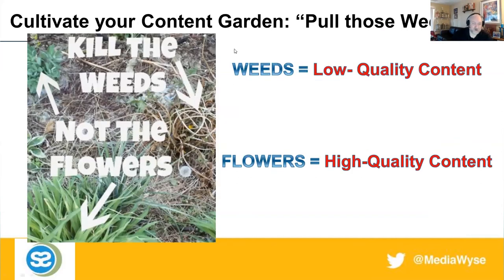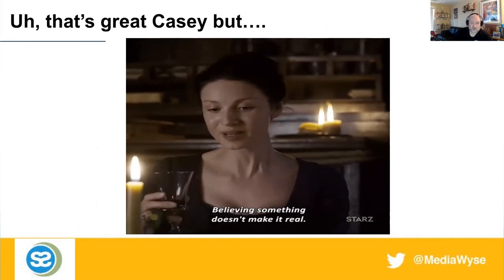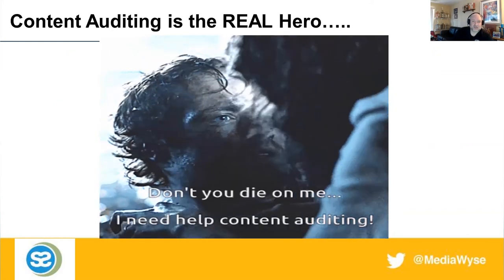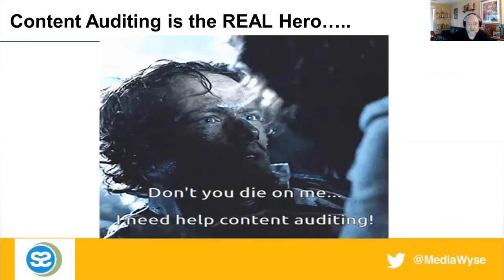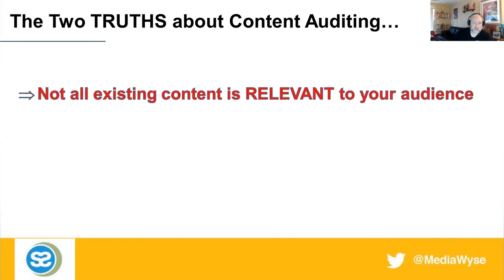Let's talk about cultivating the content garden — the meat of this presentation. It's about weeds (low-quality content) versus flowers (high-quality content). I have a whole tutorial on this. The two truths about content auditing: not all existing content is relevant to your audience, and don't expect every single page on your site to rank. Here's an example of a site with a massive amount of content and no organic traffic — 5,700 URLs, and look at the small amount of content actually generating traffic. John Mueller from Google is direct: 'Yes, absolutely — you should remove content. If you don't want it in the index because you know it's low quality, then removing that does help us understand the rest of your site better.'